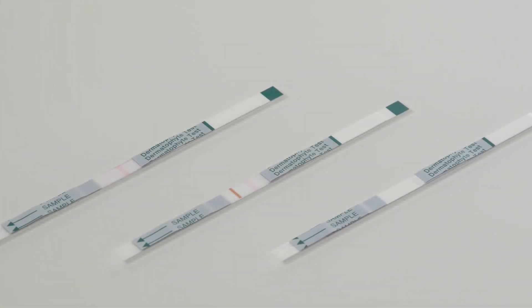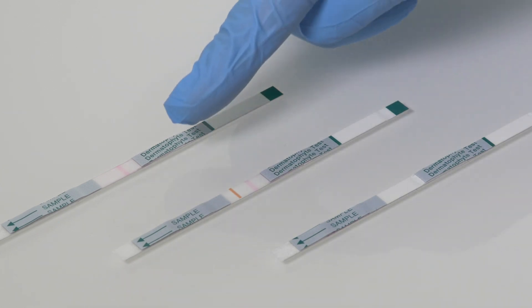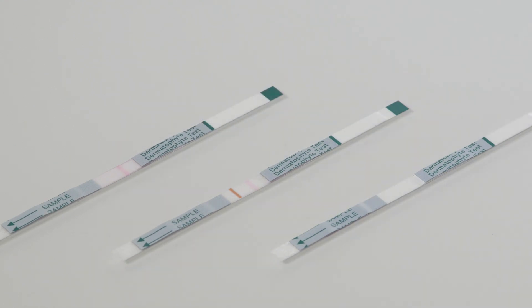There are 3 possible outcomes as shown in the 3 test strips here, following the test. Firstly, a single pink line. This indicates the test has been successful, but is a negative result. There is no Dermatophyte nail infection within this sample.